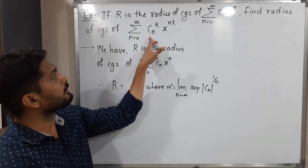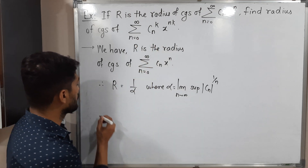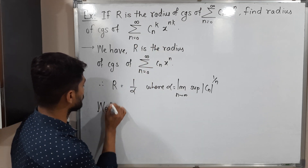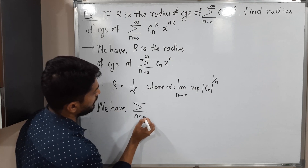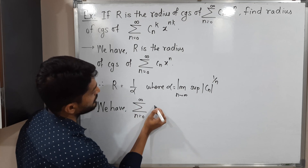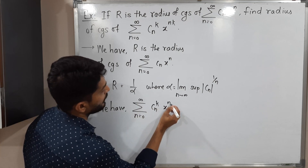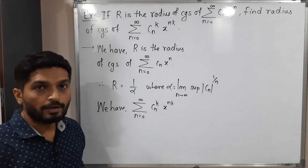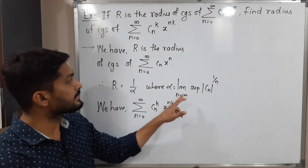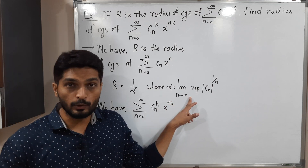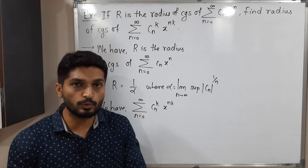Right now we have this power series and we have to find its radius of convergence. The given power series is summation n running from 0 to infinity, cₙ raised to k, x raised to nk. To find its radius of convergence, we have to find this limit first, and whatever its value, its reciprocal is the radius of convergence.